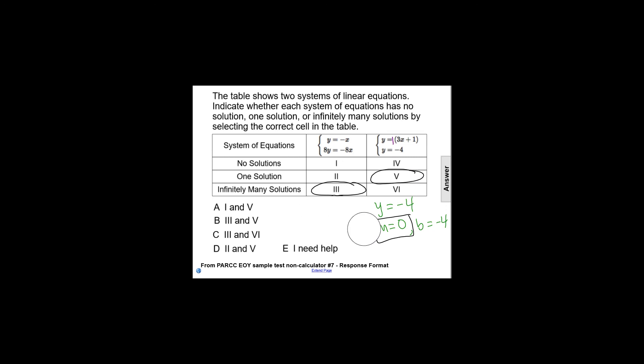So the first system has infinitely many solutions. The second system has one solution. So our choices are 3 and 5, making our answer choice B.